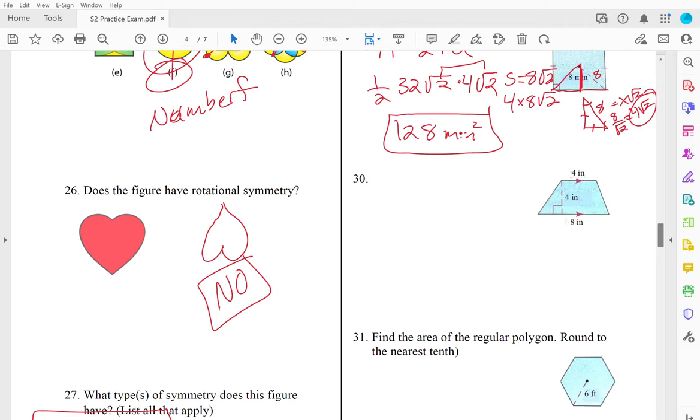Number 30. This is a trapezoid. Trapezoid has its own formula. It's one half sum of the bases times the height. So these are my bases. So I have one half, eight plus four. Well that's twelve. And then times the height which is four. Well one half of four is two. Two times twelve is twenty-four. So the area is twenty-four inches squared.